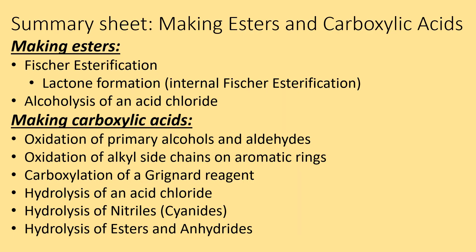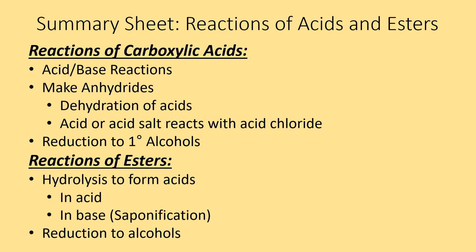Your summary sheet should have all of these reactions on it. The first PowerPoint was making esters — three reactions. Making carboxylic acids had six reactions. Next on your summary sheet are the ones from this video: acid-base reactions of carboxylic acids, making anhydrides, reduction of carboxylic acids, and then reactions of esters — hydrolysis in acid and in base, and reduction to alcohols.